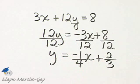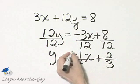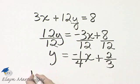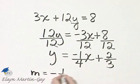This equation is now solved for y. When your equation is solved for y, the coefficient of x is the slope. So the slope of this equation is negative one-fourth. And what is the y-intercept?